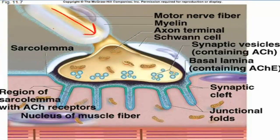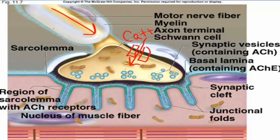As the nerve impulse travels down the synaptic terminal and into the synaptic end bulb, the change in membrane potential is going to stimulate the opening of voltage-gated calcium ion channels. That's going to cause an influx of calcium ions into the synaptic end bulb. The calcium ions in the synaptic end bulb are going to stimulate the exocytosis of these synaptic vesicles, releasing the neurotransmitter outside of the cell.